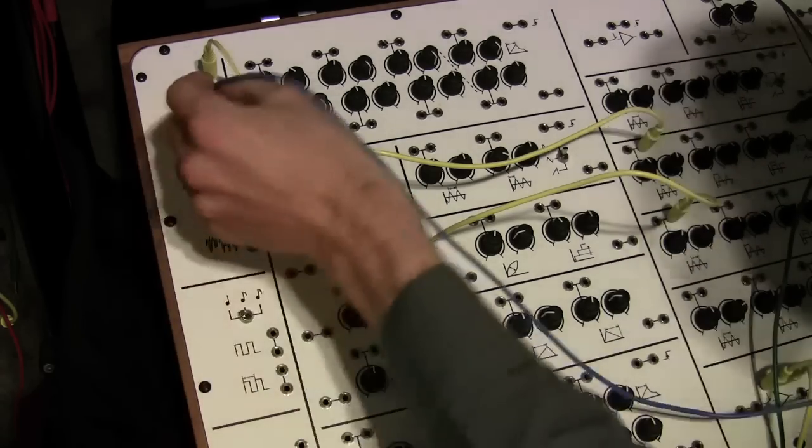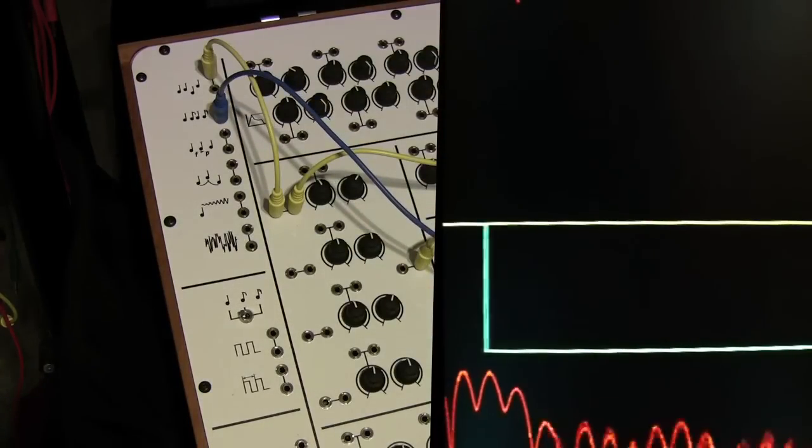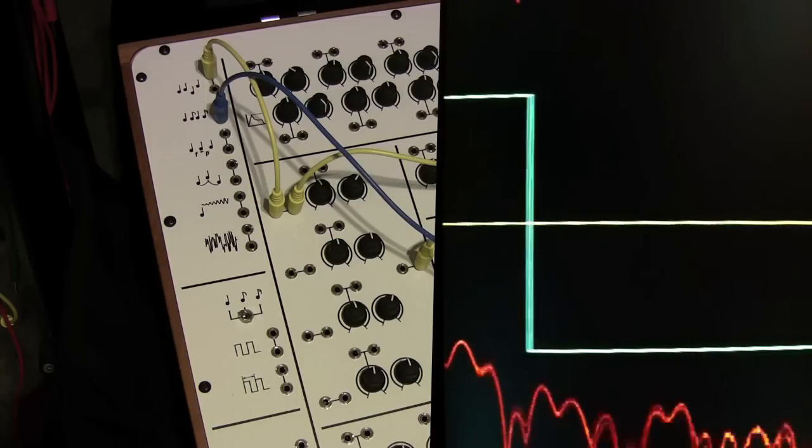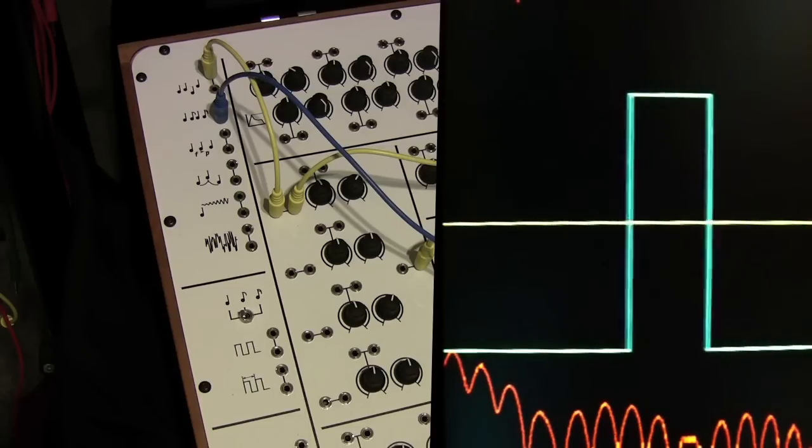The first signal here is a gate signal and this is triggered every time my note is pressed. Over on the oscilloscope here we can see the gates coming on and off as I'm pressing some keys on a keyboard.